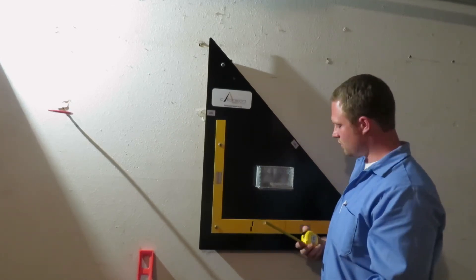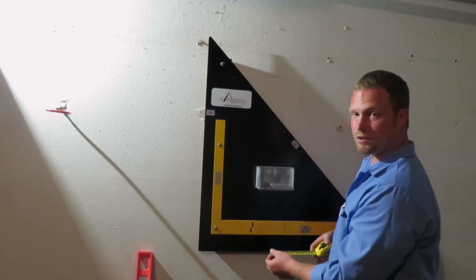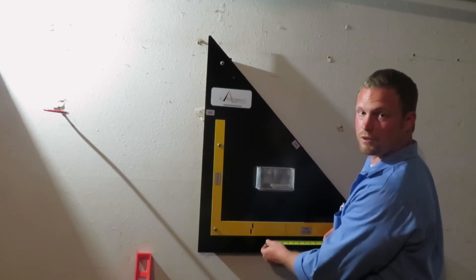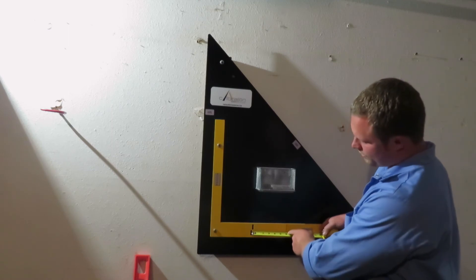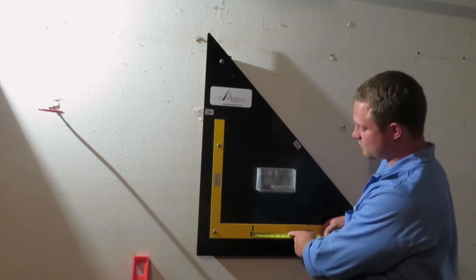But then what you'll do is you have two slots right here. On the bottom slot is going to be the pull part of the tape measure. So you put it in the slot, you'll pull against that slot and verify that it lines up exactly with the 6-inch mark.